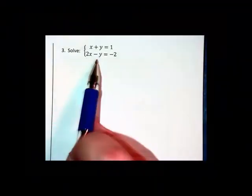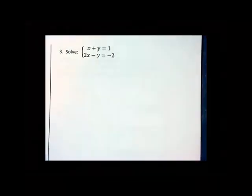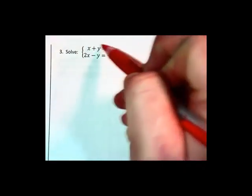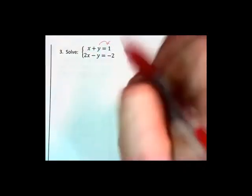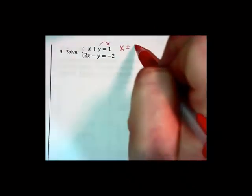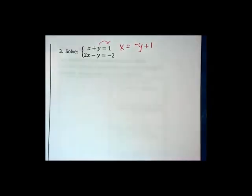We don't have one of the equations solved for x or y, so I'm going to choose x and move the y to the other side. We write that as x equals negative y plus 1 after we subtract y on each side.